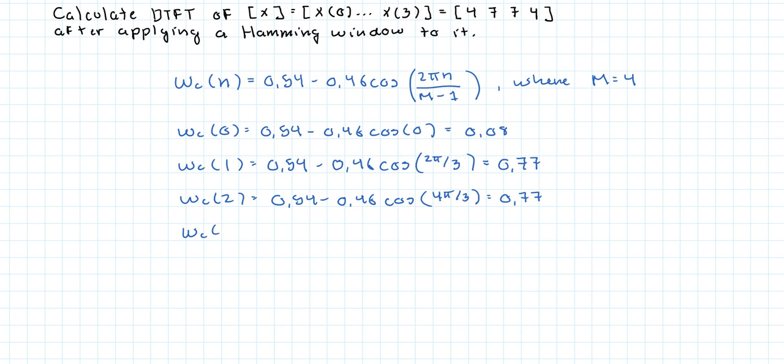And finally, w(3) is 0.54 minus 0.46 cosine of... wait, is that right? 2 times 6, 2 times 3, no, that's 2π. Sorry about that. And so we would get, that's the same as 0, that would be equal to 0.08.